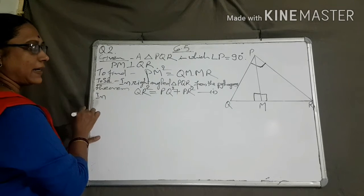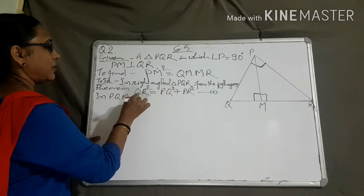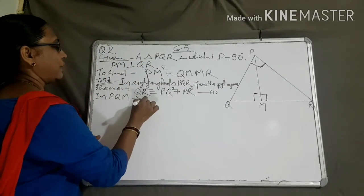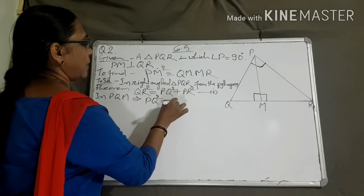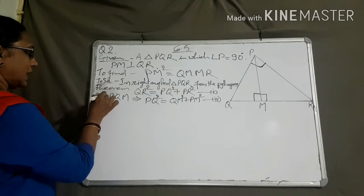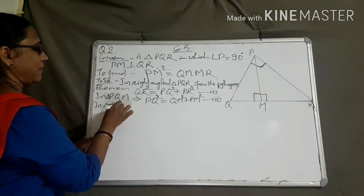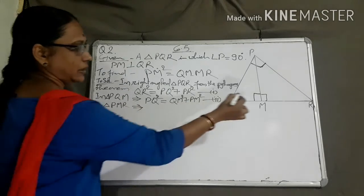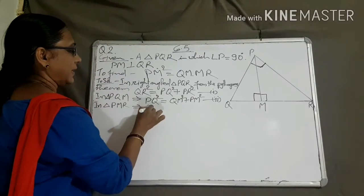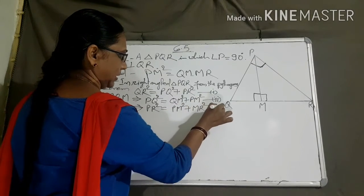In right-angle triangle PQM, from the Pythagoras theorem — notice that M has the 90-degree angle, so PQ is the hypotenuse — PQ square equal to QM square plus PM square. Equation number two. And similarly, in triangle PMR, from the Pythagoras theorem, the 90-degree angle is at M, so PR square equal to PM square plus MR square. Equation number three.